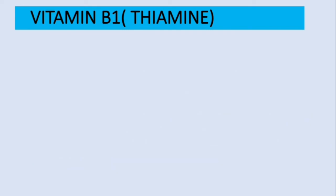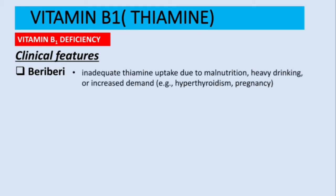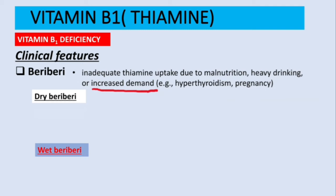Now let's talk about clinical features. The first is beriberi — caused by inadequate thiamine intake due to malnutrition, heavy drinking, or increased demand during pregnancy or hyperthyroidism. There are two types: dry beriberi and wet beriberi.